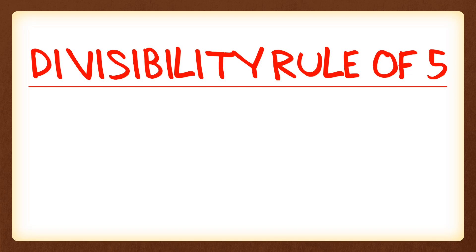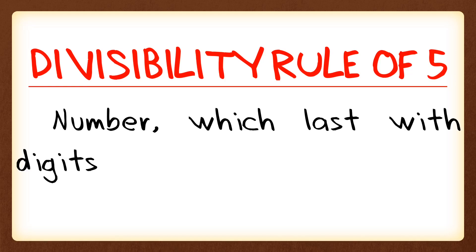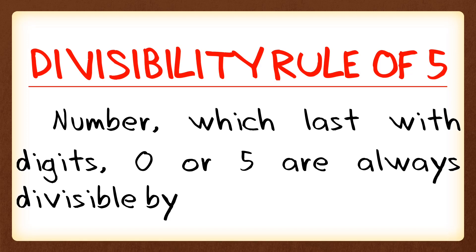The Divisibility Rule of 5 states that numbers which end with the digits 0 or 5 are always divisible by 5. Simply put, if the last digit is 0 or 5, the number is always divisible by 5.